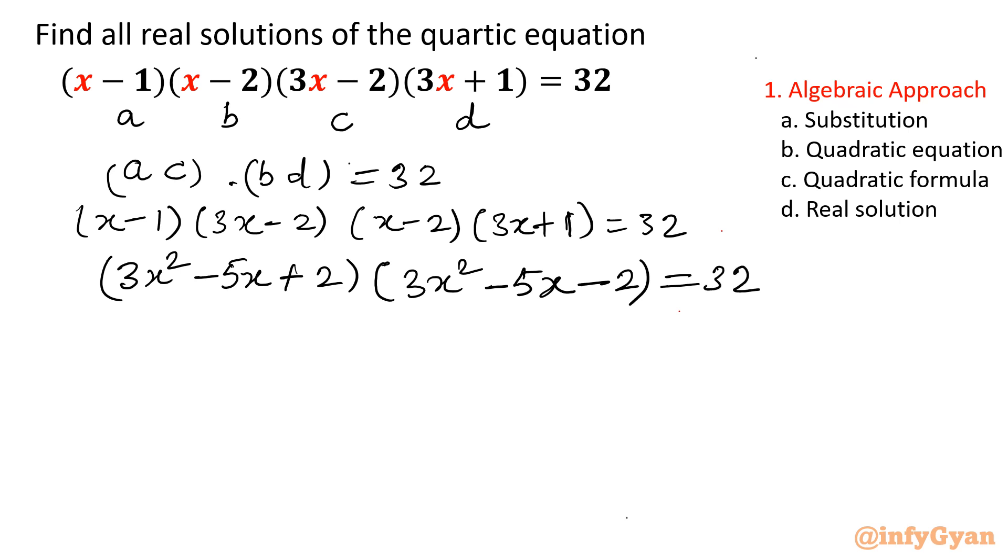Now you can easily see this term, I am going to substitute something. Why? Then it will become easier. So let 3x² - 5x equal to t. The equation will convert into (t + 2)(t - 2) equal to 32.